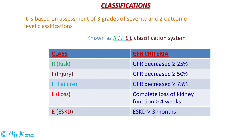In the first stage, Risk, the GFR is decreased by 25% or more. In the Injury stage, the GFR is decreased by 50% or more. In the Failure stage, the GFR is decreased by 75% or more. The fourth stage, Loss, includes complete loss of kidney function for more than four weeks. In the last stage, End Stage Kidney Disease, there is presence of end stage kidney disease for at least three months.